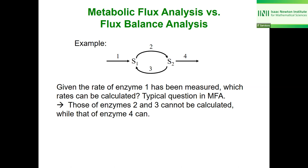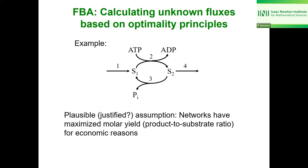We should distinguish metabolic flux analysis from flux balance analysis. If only reaction one is known, the equation system is underdetermined. If we also measured rate four, the system becomes overdetermined — by minimizing the squared deviation we can take the arithmetic mean of one and four. Interestingly, the system can be simultaneously underdetermined and overdetermined. A main assumption in FBA is that networks have maximized the molar yield — the product-to-substrate ratio.